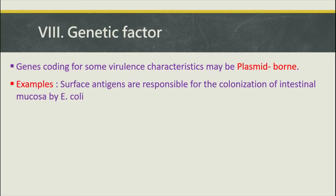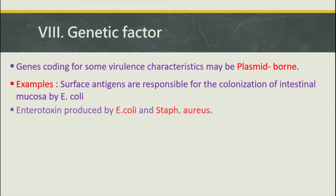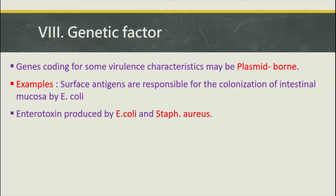A best example: surface antigens responsible for colonization of the intestinal mucosa by E. coli are plasmid-encoded. Although E. coli are normally present in the intestine, certain strains carry a specific plasmid coding for a colonizing factor, enabling them to adhere to the mucosa. These plasmids also code for a specific enterotoxin, also found in Staphylococcus aureus, enabling those E. coli strains to cause gastroenteritis.